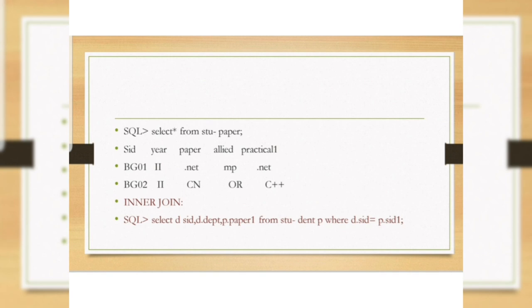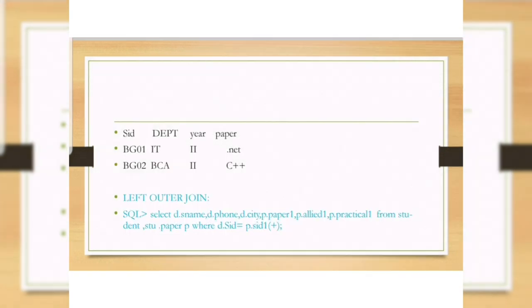Inner join query: SELECT d.studentid, d.department, p.paper1 FROM student d, student_paper p WHERE d.sid = p.sid1. Viewing the table.